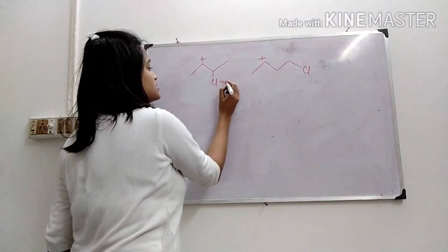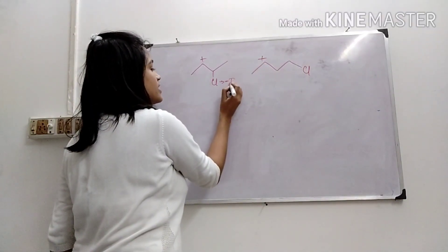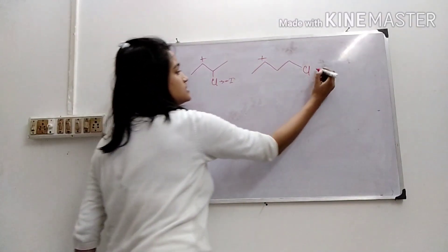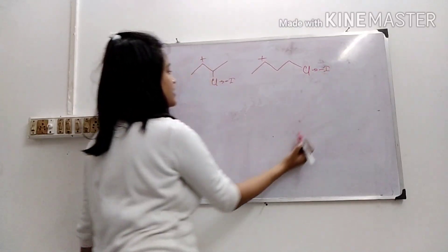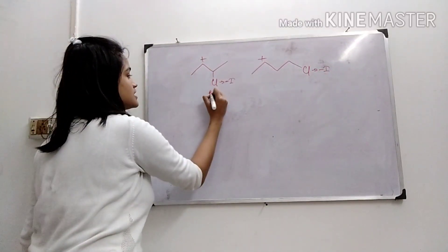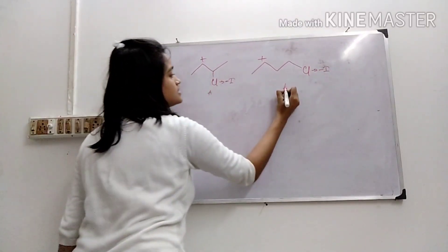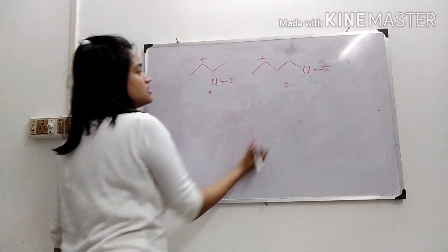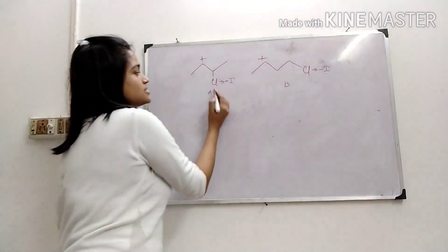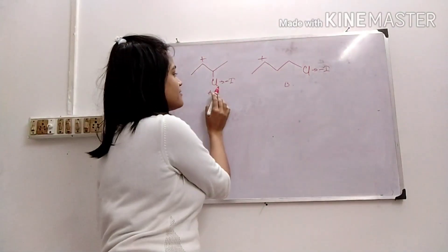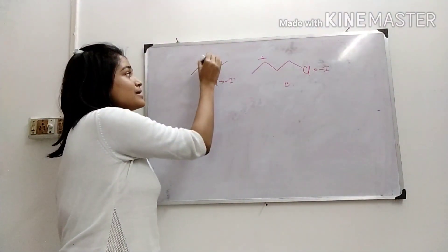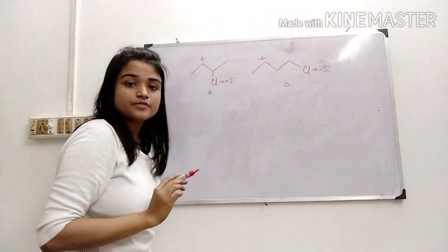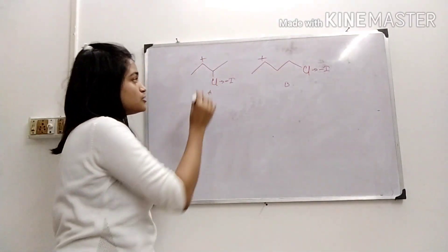Cl means minus I effect. This Cl is also exerting a minus I effect. So this is position A and this is position B. This minus I effect will destabilize this positive charge on the carbocation.